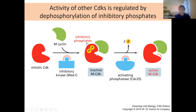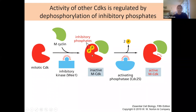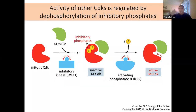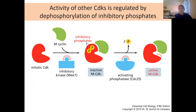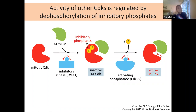Cyclin B combined with CDC2 is the M phase mitosis promoting factor — cyclin B combined with CDC2 is your active MPF. It accumulates throughout G2, building more and more until it reaches its highest point. At that time, if other environmental cues and master regulators like p53 and DNA repair pathways all signal that the cell is healthy and has enough material, that triggers dephosphorylation of CDC2, pushing the cell into mitosis through rapid degradation of cyclin B.